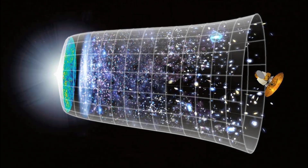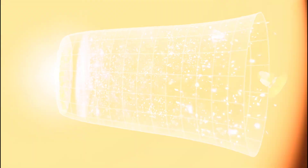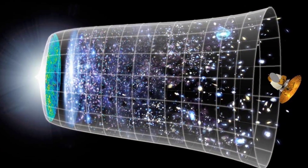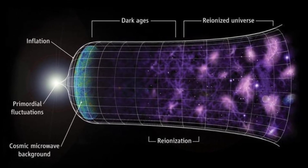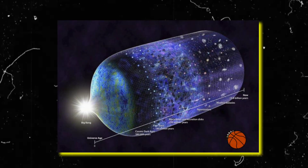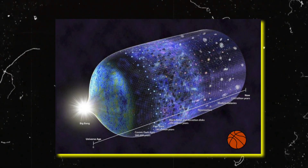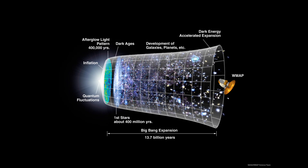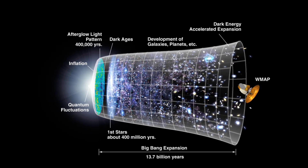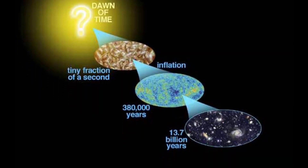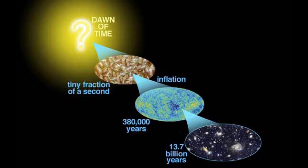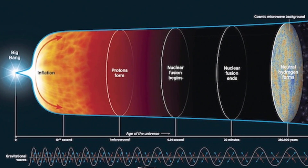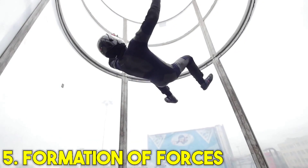Inflationary Epoch: Shortly after its inception, the universe experienced an inflationary epoch — a fraction of a second during which it expanded exponentially fast. This rapid expansion smoothed out the distribution of energy and matter, laying the groundwork for a uniform universe. Inflation theory helps explain why the universe looks the same in all directions, isotropic, and why it appears flat on large scales.